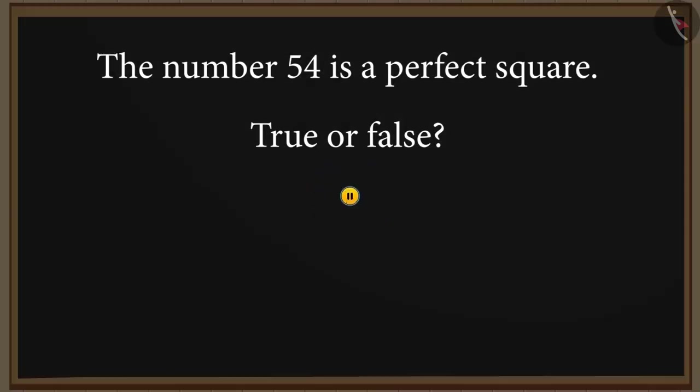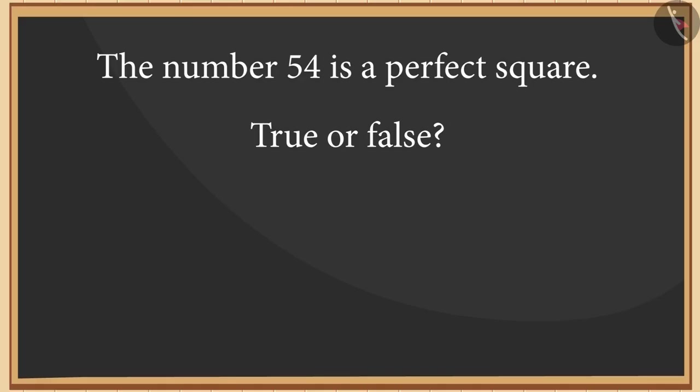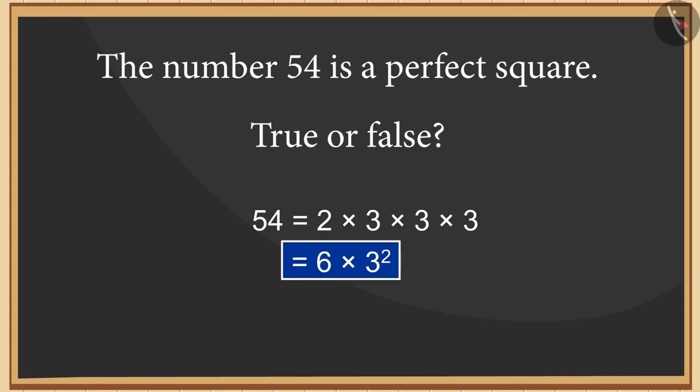You can pause the video here and think of an answer. If you believe that this statement is true, then you must be thinking that since the number is ending with 4, this number must be a perfect square. But this logic is incorrect. Let us factorize this number. After factorizing, we can see that we cannot write the number 54 as the square of any whole number. Therefore, this statement is false.